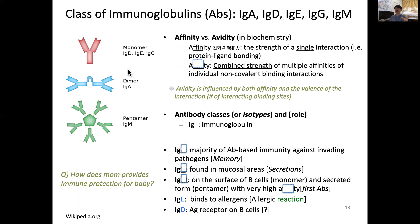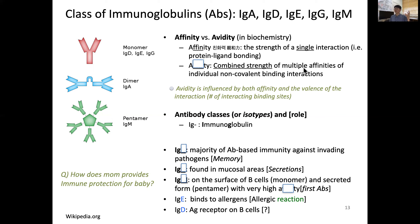Antibodies come in different shapes: a single Y shape — a monomer — includes IgD, IgE, and IgG. Two antibodies bound together form a dimer, typical of IgA. Five antibodies put together form a pentamer, which is IgM. IgG is bivalent, IgA has four pockets, and IgM has even more. Once it recognizes antigen, it may bind from multiple sites. Avidity is the combined strength of multiple affinities, influenced by both the strength of a single interaction and the number of binding arms — the valence of the interaction.